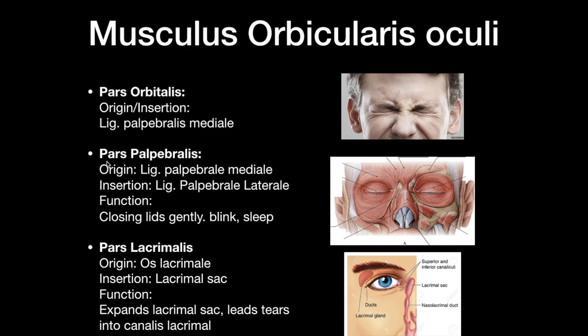Pars palpebralis originates at the ligamentum palpebrale mediale and inserts at the lateral palpebral ligament. Pars palpebralis acts involuntarily — it gently closes the eyelid, like blinking or sleeping.